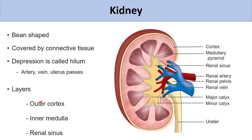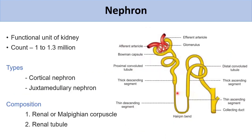Now, the layers of the kidney. There are three areas. First is the outer cortex. Then the inner medulla, which contains pyramid-shaped structures. Third is the renal sinus, which is the central area where blood vessels and urine flow pass through.